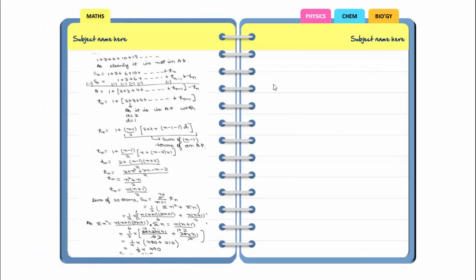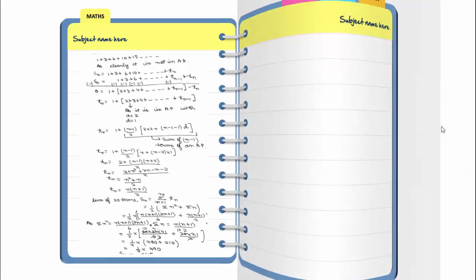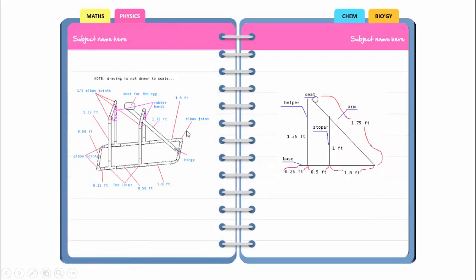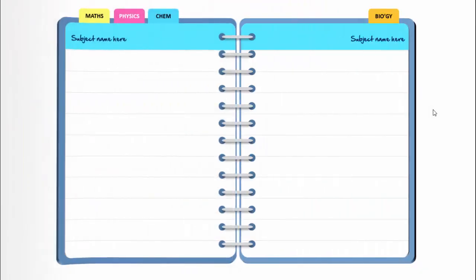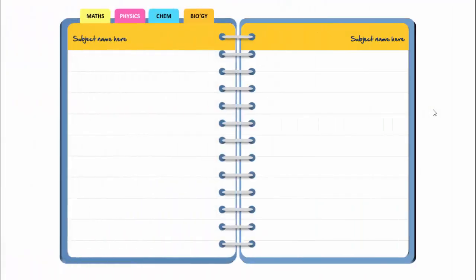When I click, the page turns and you can see this is the first subject which is maths. You can add the subject name and any text of your choice here. When I click again it will go to chemistry — you can add any of your science or physics project here — and then comes chemistry and then biology. Depending on your requirement you can increase or decrease the pages.